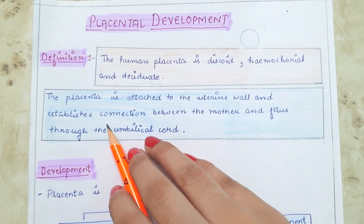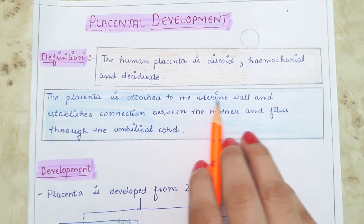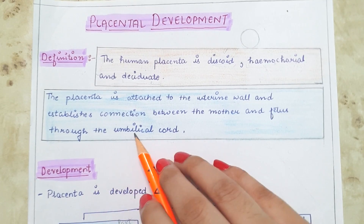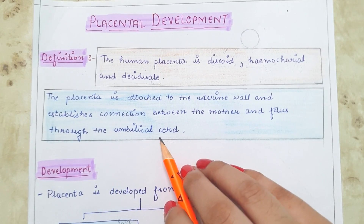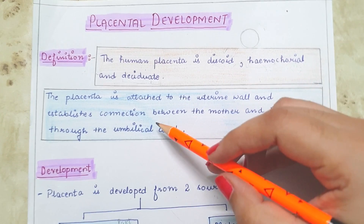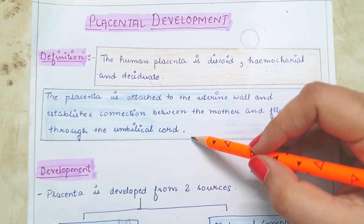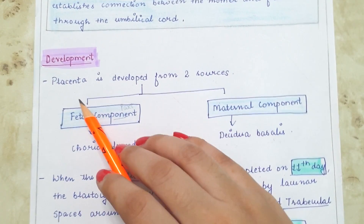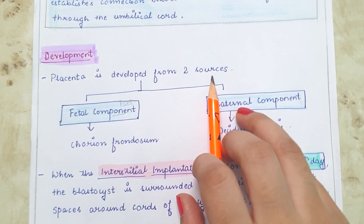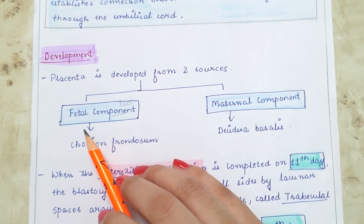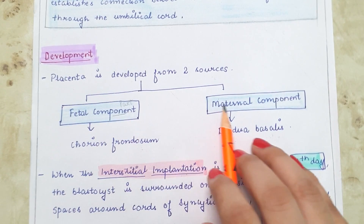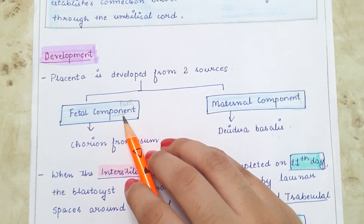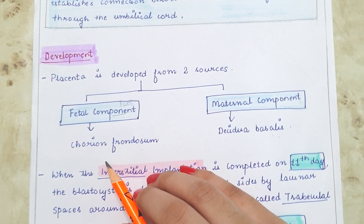The placenta is attached to the uterine wall and establishes the connection between the mother and the fetus through the umbilical cord. The placenta develops from two sources: the fetal component and the maternal component.